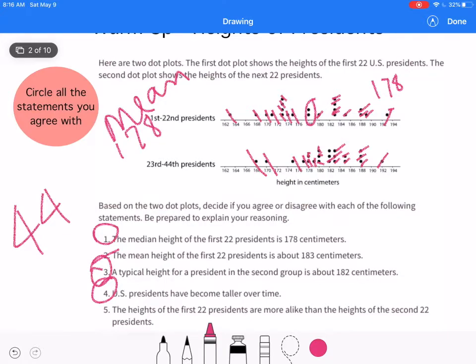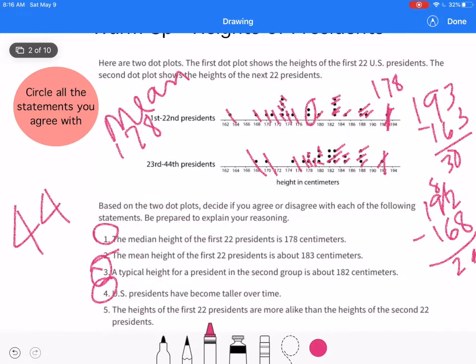The heights of the first 22 presidents are more alike than the heights of the second 22 presidents. The range here is 193 minus 163, so that's 30. This would be 192 minus 168, so that's only 24. So I would say they are not more alike. They are more different.